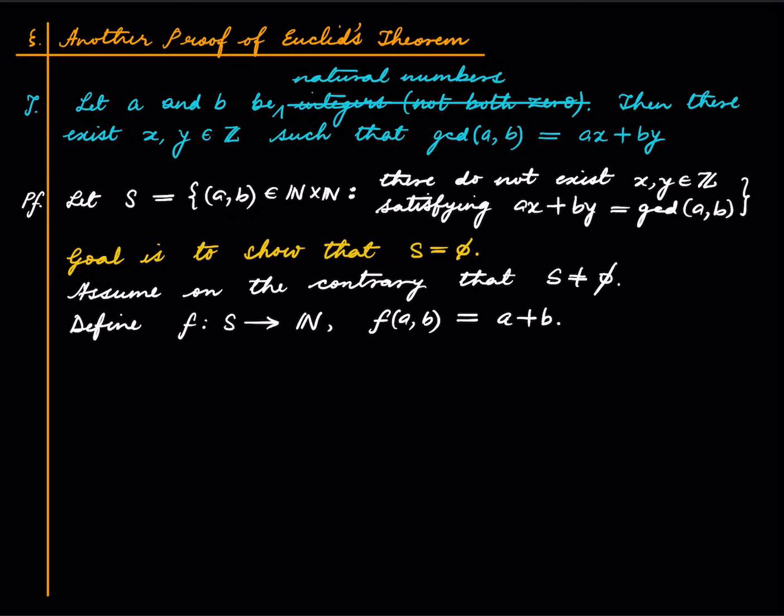And now we will pick something with the smallest size. So let A0, B0 be an element of S such that F of A0, B0 is smallest possible. Right. Okay.